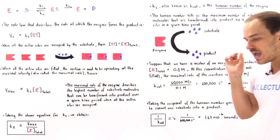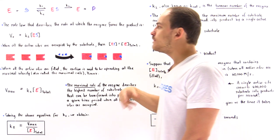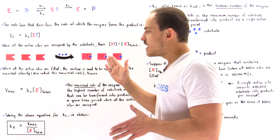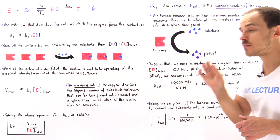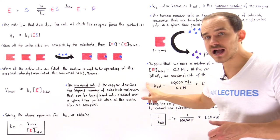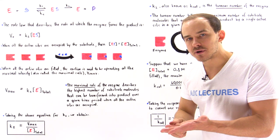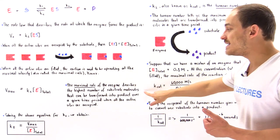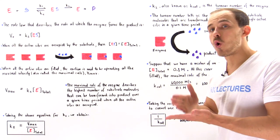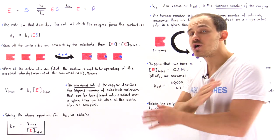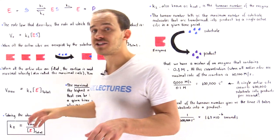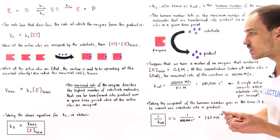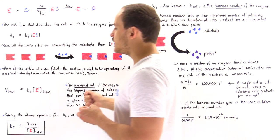How do we physiologically interpret the Vmax value? Vmax, the maximum rate of the enzyme, describes the highest number of substrate molecules that can be transformed into product molecules over a given time period when all active sites are saturated — occupied with that substrate. That is the meaning of Vmax.